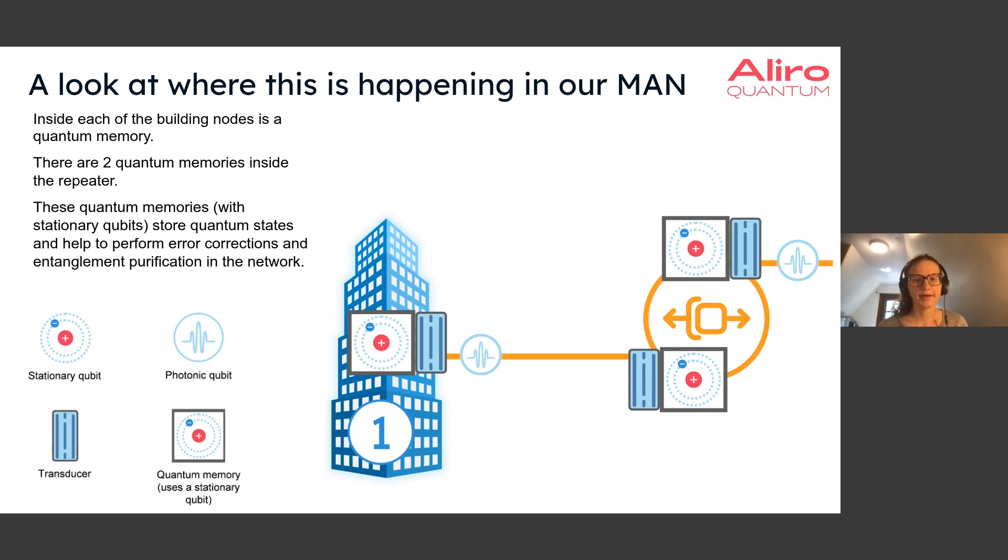There is also the quantum repeater, which will have two quantum memories in this example. And again, these quantum memories will have one or more stationary qubits with these transducers as well attached. And photonic qubits are shown here, transmitting quantum information between the quantum memories.